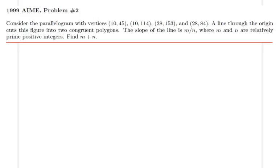Hello everyone, in this lecture we will be going over 1999 AIME problem number two. We are considering a parallelogram with given vertices. We are also told that a line through the origin cuts the figure into two congruent polygons, and we want to find the slope of this line. So let me go ahead and make a simple sketch of this picture and then we can decide how to proceed.